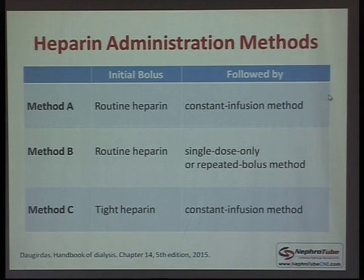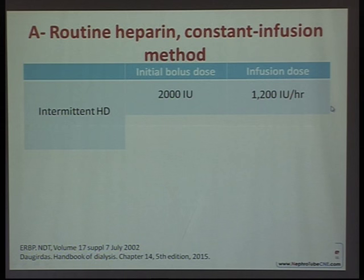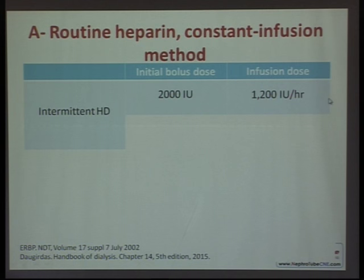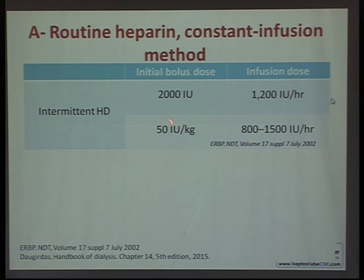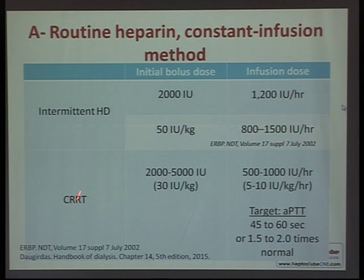Starting with method A, there is no ideal protocol for heparin use on hemodialysis; multiple centers use different doses. One method for intermittent hemodialysis uses an initial bolus of 2,000 units followed by infusion of 1,200 international units per hour. The European Renal Practice guidelines recommend an initial bolus of 50 IU/kg followed by 800–1,500 IU/hour. For CRRT, the recommended approach is an initial bolus of 30 IU/kg followed by infusion of 5–10 IU/kg/hour, targeting an activated partial thromboplastin time of 1.5 to 2 times normal.